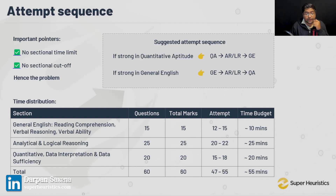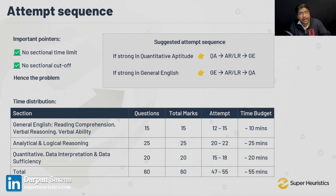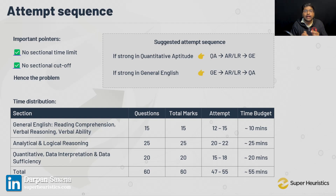Obviously, if you're somebody who's not so strong in quant but stronger in General English, then probably you might spend two to three more minutes in VA and not spend it so much on quant. So you can make minor adjustments, but this is what I would have followed — this is what would have been my attempt strategy. You can take a screenshot of this. And if you have those hours with you right now when you're watching this, you might even go ahead and attempt a mock test of SNAP — it might just help you.